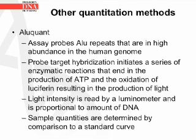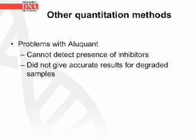The aluquant quantitation method is an assay that probes alu repeats that are in high abundance in the human genome. Probe-target hybridization initiates a series of enzymatic reactions that end in the production of ATP and the oxidation of luciferin, resulting in the production of light. The light intensity is then read by a luminometer and is proportional to the amount of DNA. Sample quantities are determined by comparison to a standard curve. Problems with the aluquant system: it was not able to detect the presence of inhibitors and it did not give accurate results for degraded samples.